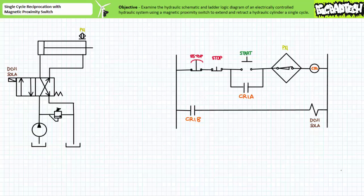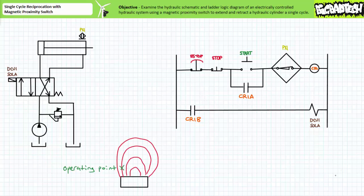The magnetic proximity switch associated with this contact also appears in the hydraulic schematic as a diamond mounted on the barrel of the cylinder. Two important points exist inside the magnetic proximity switch's range. When a magnetic object enters the operating point the associated contacts change to their opposite states — in this case our normally closed contact will open. Upon leaving the release point the switch returns to its deactivated state and our normally closed contact will reclose.